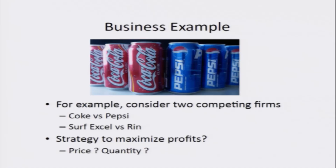For example, let us take a common market example. Everyone is familiar with the two dominant soft drink makers Coke and Pepsi. They are interested in maximizing their profit — what is the strategy they have to employ? Should they increase the quantity, decrease the quantity, increase or decrease the price? This is an example of a strategic interaction between two firms in a market.